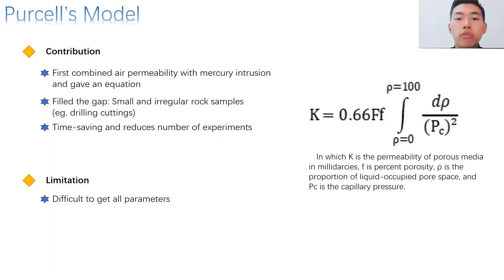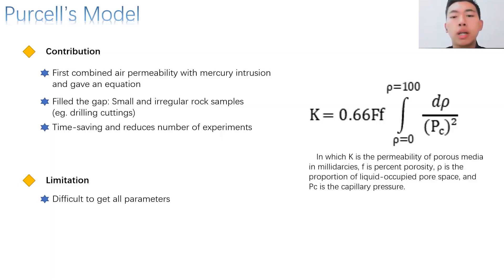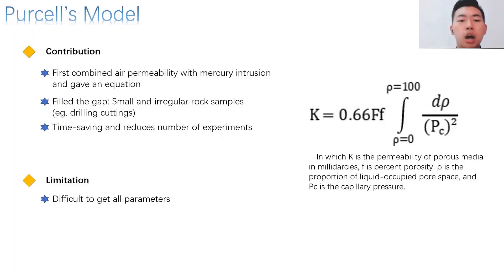Now I am going to show you four models I delineated in my paper. The first one is Purcell's model. His research fills the gap of permeability measurement in small and irregular samples like drilling cuttings, and his experiment only took hours, which is fast given that earlier trials took days to finish. However, the limitation of this method is that it contains too many parameters, as you can see on the right side of the slide, so it is always hard to obtain them all.